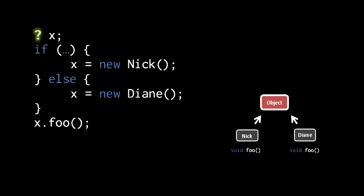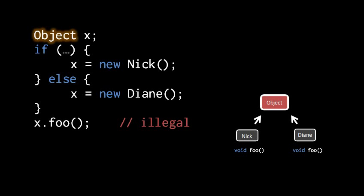The problem is that x needs to be of a type that can hold both a Nick or a Diane object. So you might say we should make x of type capital O object. This would allow us to assign either a Nick or a Diane to x. The problem is that we can't invoke foo on x. x's compile time type is object. The object class doesn't have any such method foo, so the compiler doesn't allow this.